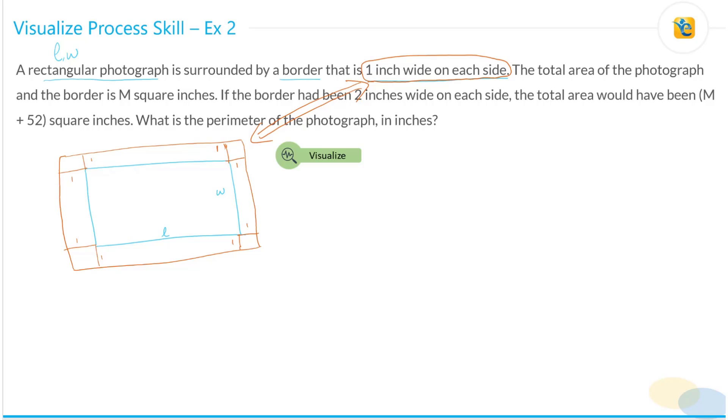Now let's read further. The total area of photograph and the border is M square inches. What does that mean? What would be the total area of the photograph and the border? What are the new dimensions of this outside structure over here? It is L plus you have one inch here and one inch here, L plus two. And what is the width of this? Width is also one inch here and one inch here, width plus two.